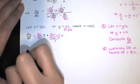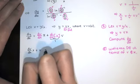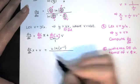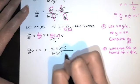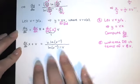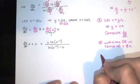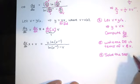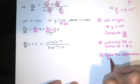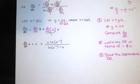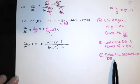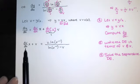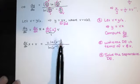The derivative on the left-hand side is replaced by dv/dx times x plus v. The right-hand side can be written in terms of v as v times natural log of v to the negative one, minus v. This is always separable, so we go ahead and separate the variables.